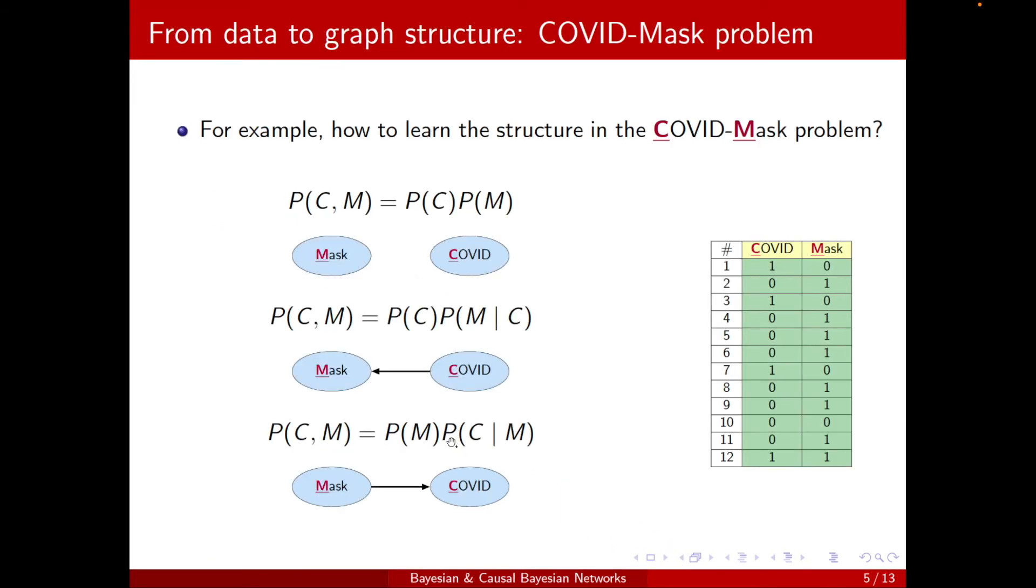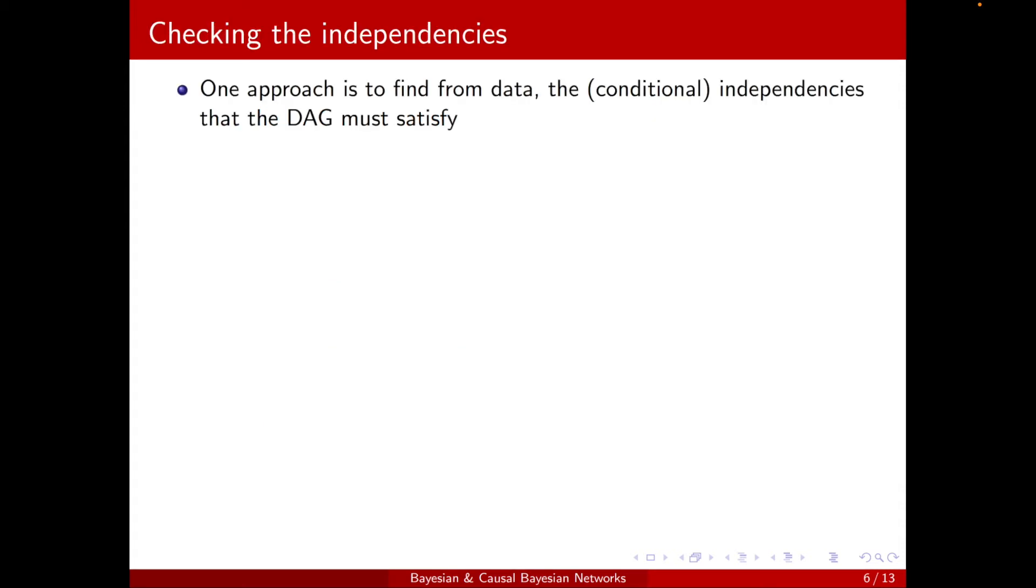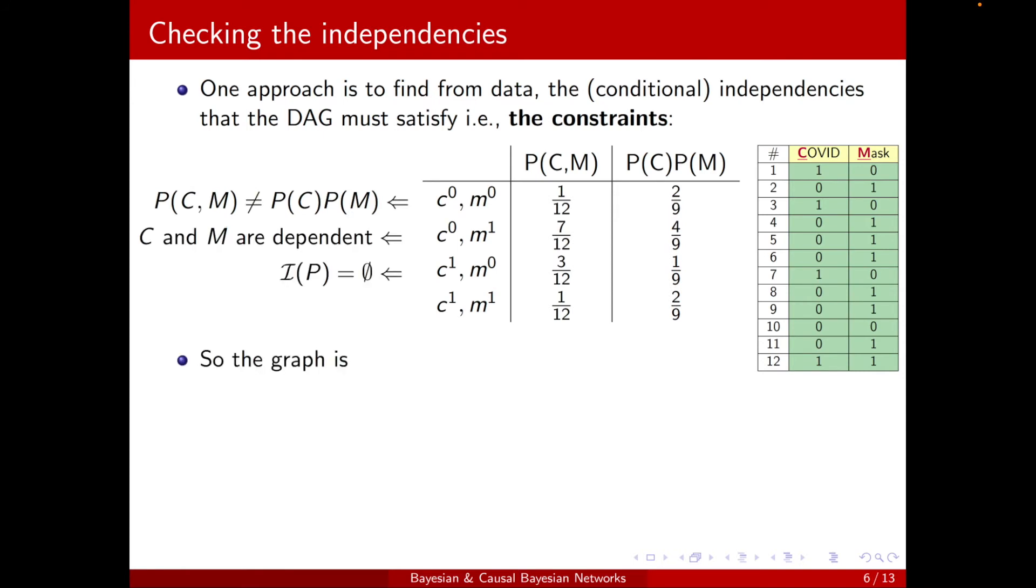Well, we just checked which of these three structures satisfied the constraint that we found from the table. Well, just imagine that we have a huge network with many number of variables. We cannot just check every single network and see if they satisfy the constraint or not. It will be very costly or infeasible. So we need to come up with an algorithm, and that's the focus of our next sections.